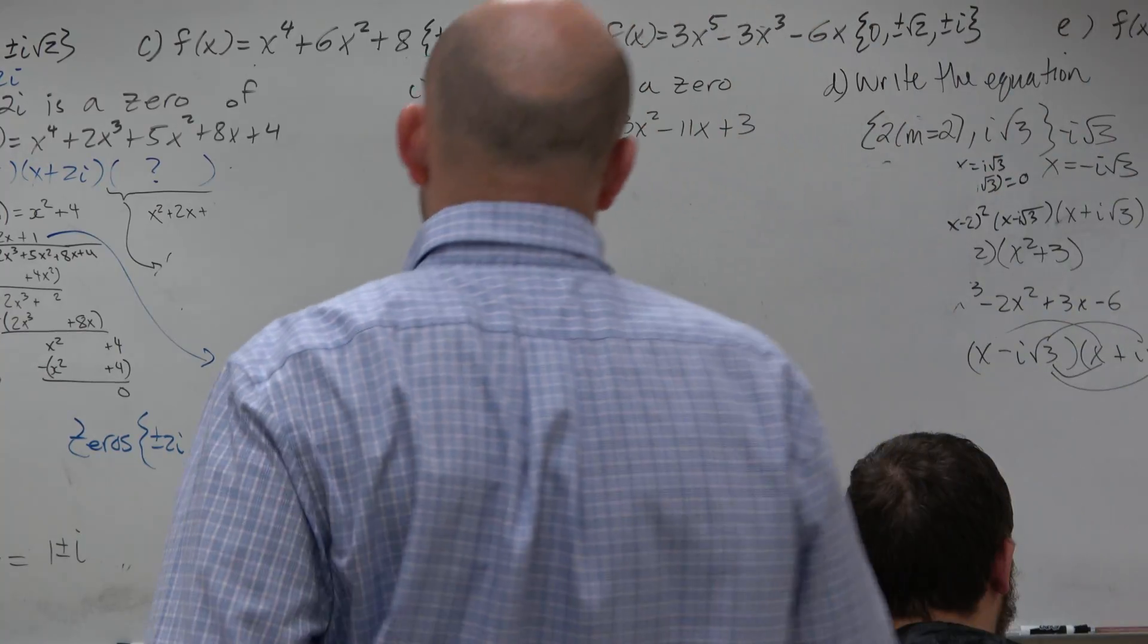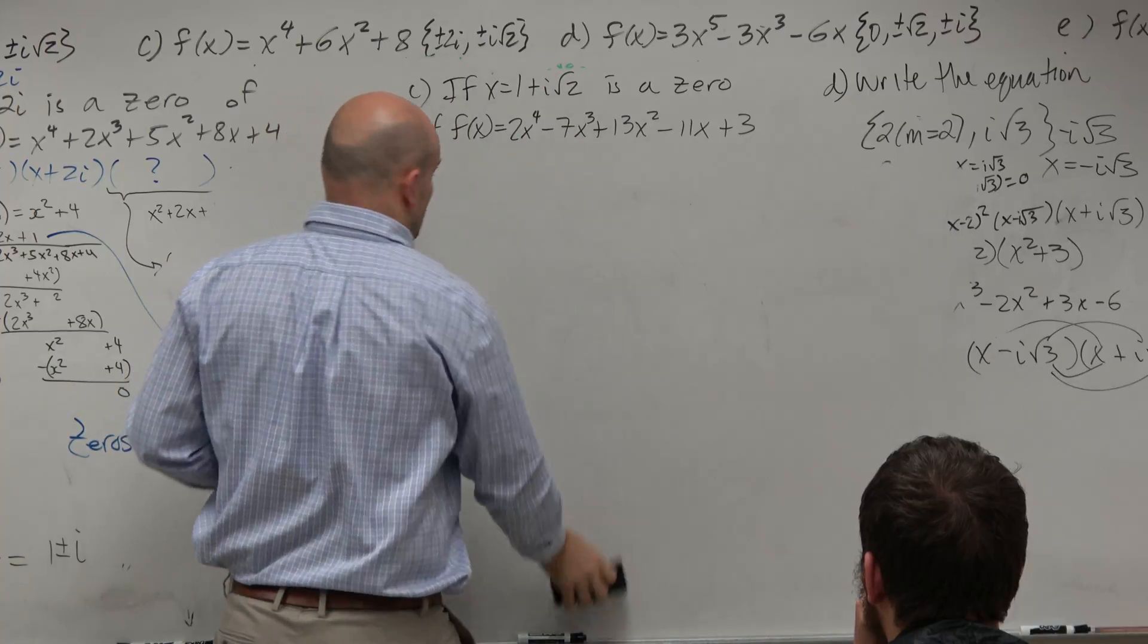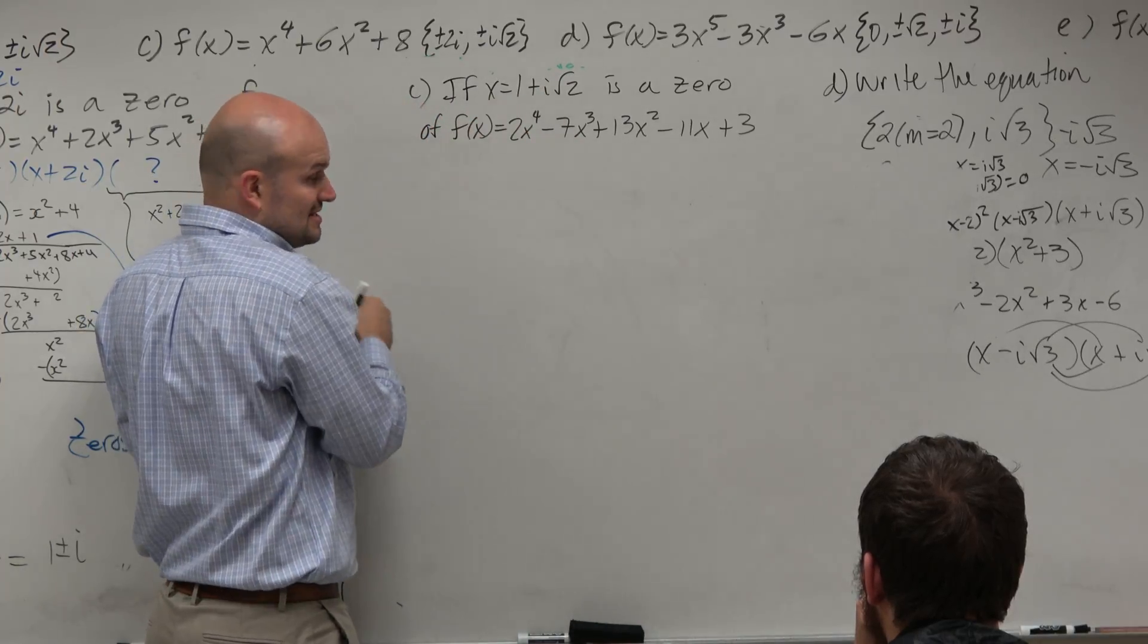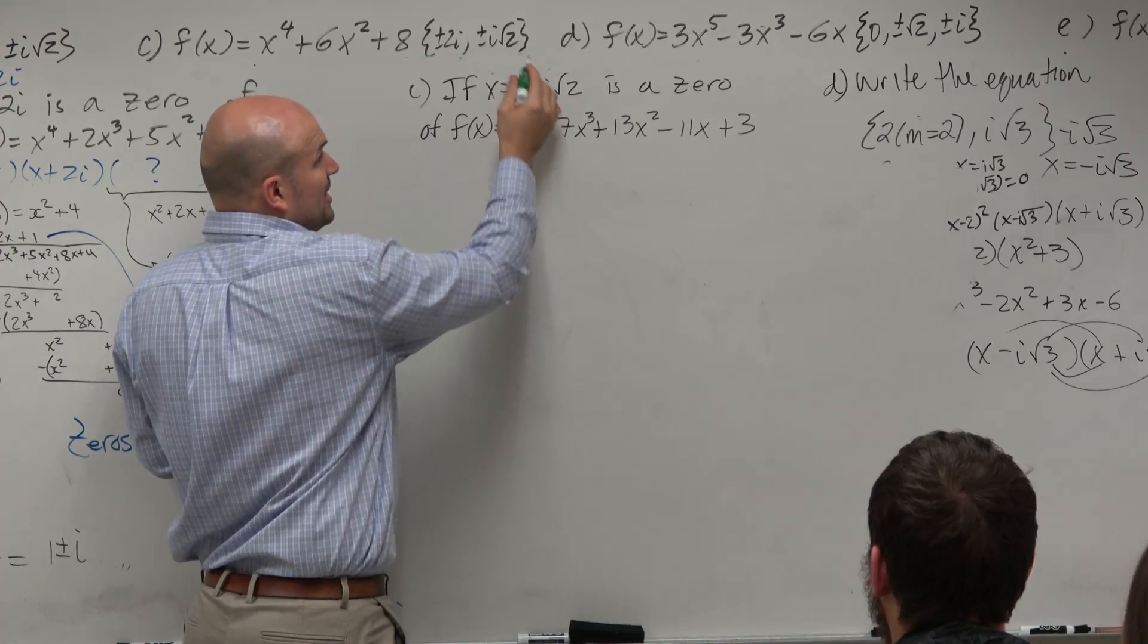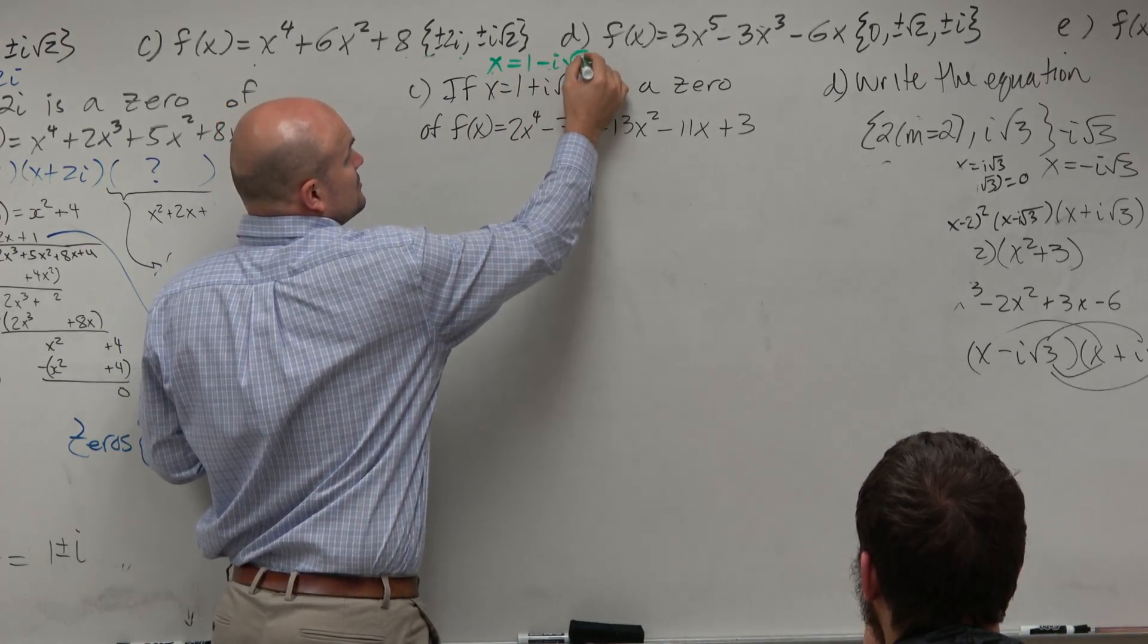So first a point, and what I brought up here, as we talked about with this, is if I have x equals 1 plus i square root of 2, we know that the conjugate pair has to exist, x equals 1 minus i square root of 2.